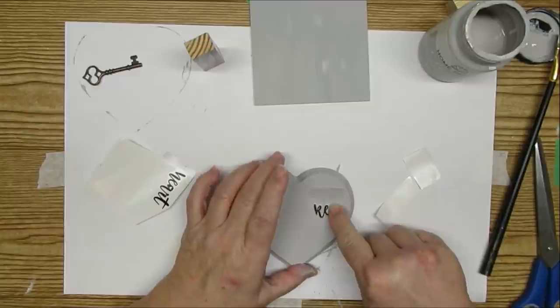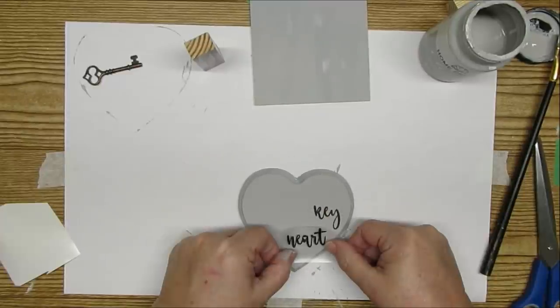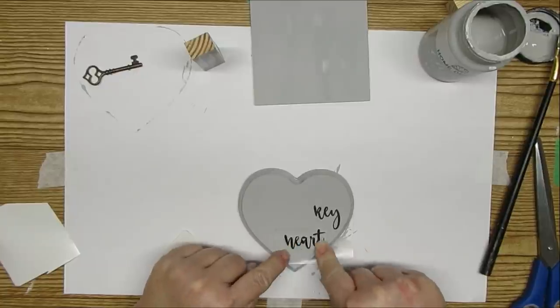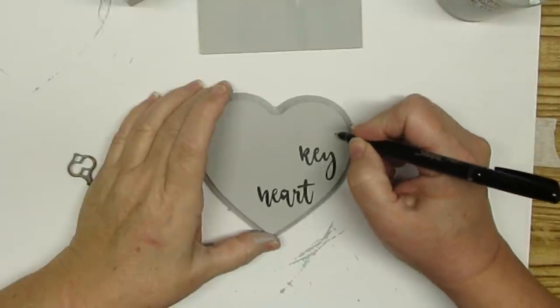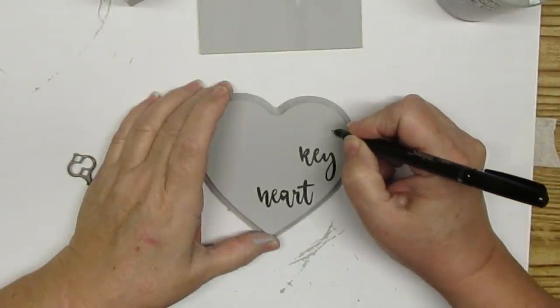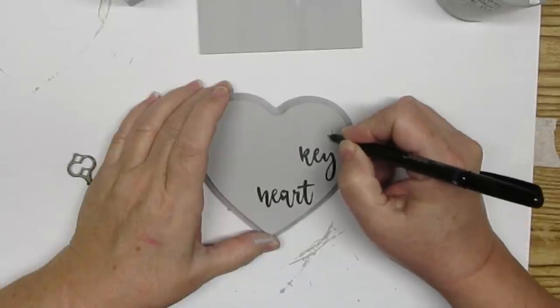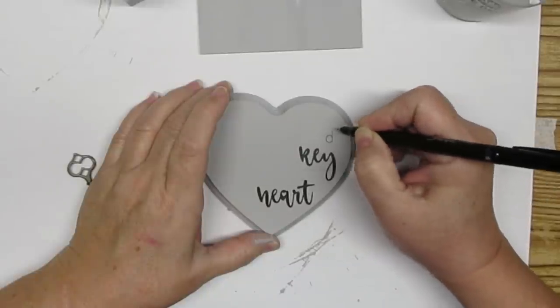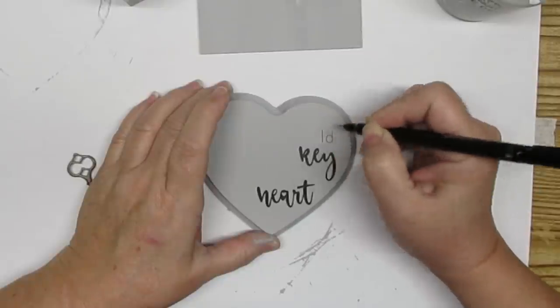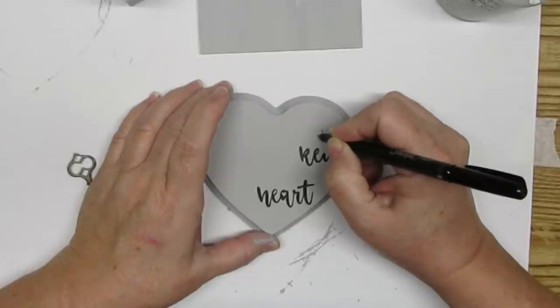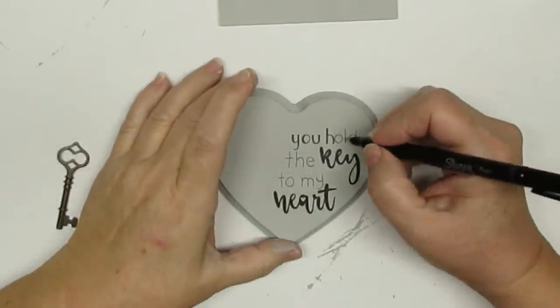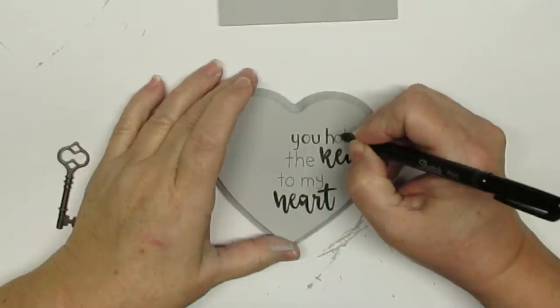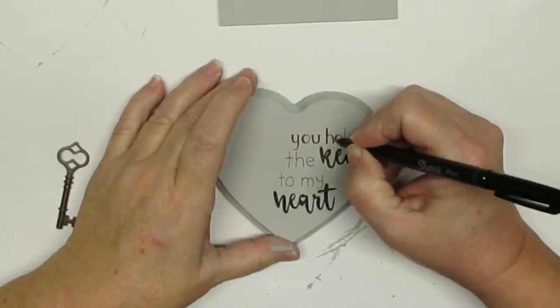Using my Cricut Joy, I just cut out the words key and heart, and I'm going to attach those to the wooden heart. Using a Sharpie fine point pen, I'm going to write the words you hold on top of the word key, then the next to key, and then my on top of the word heart. I always work my way backwards to make sure that I have enough space for all of the letters. I'm just going to thicken the letters up a little bit, and then add some shadow lines to make it look a little bit more high-end.